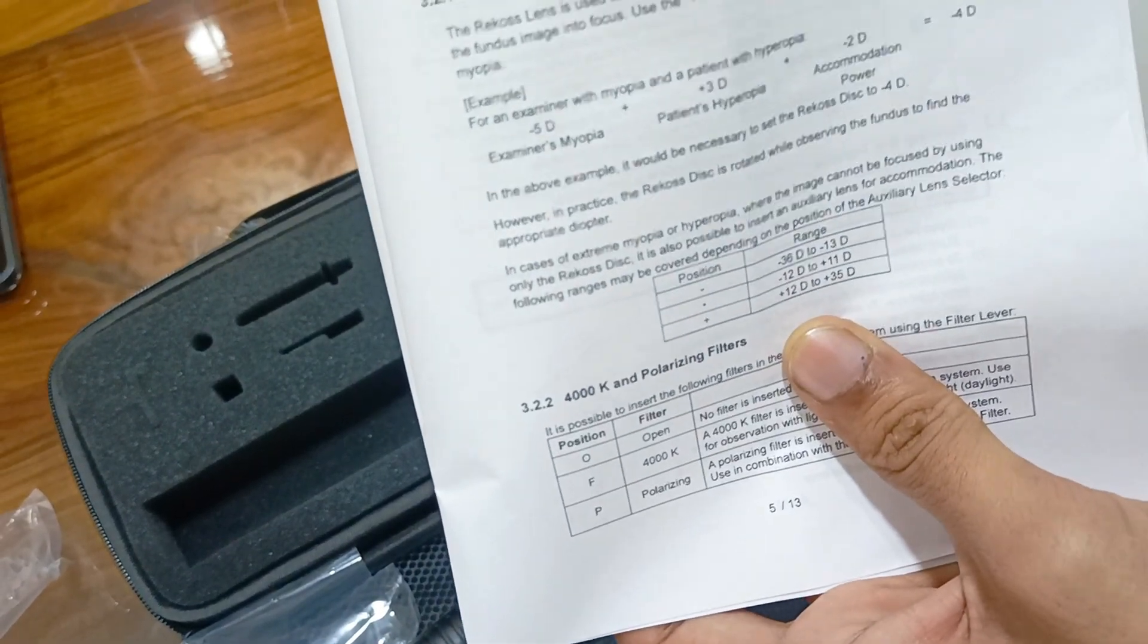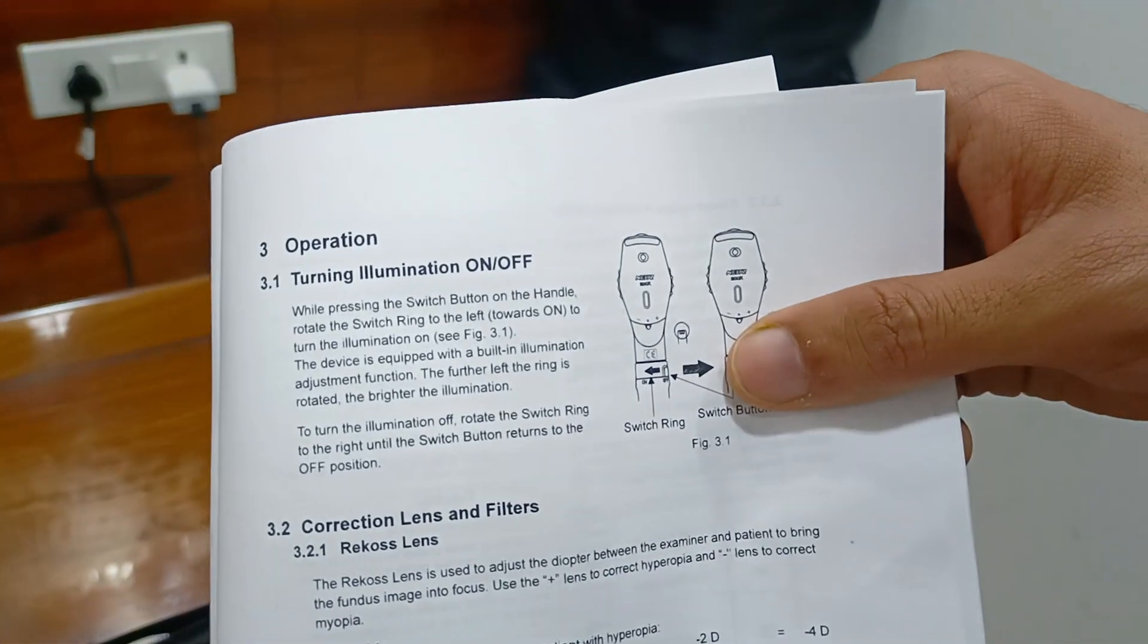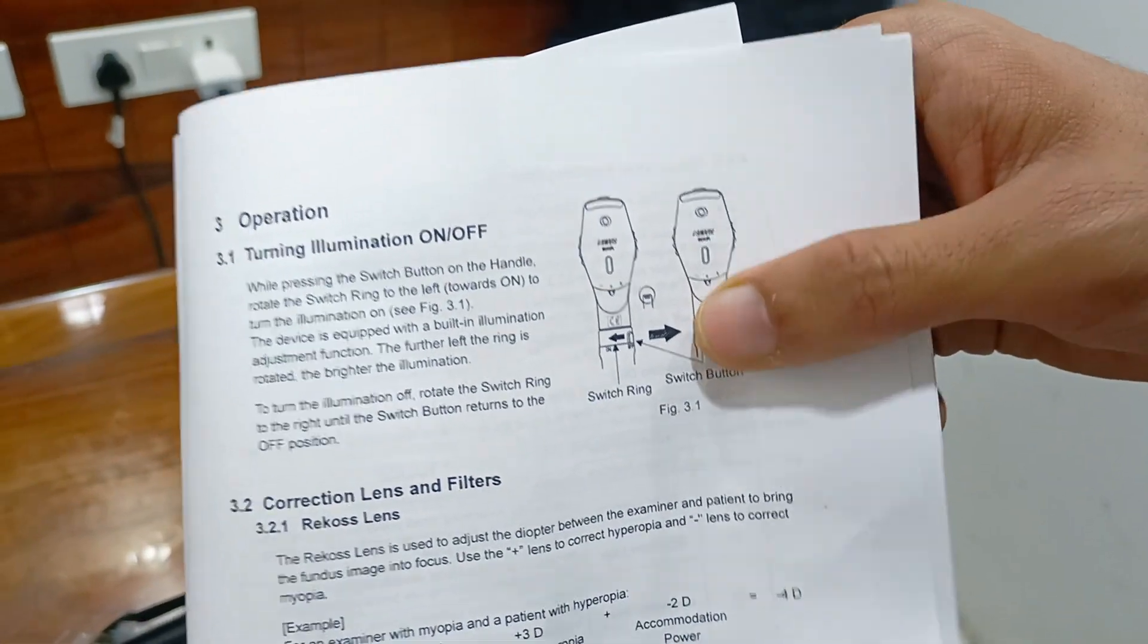Red-free filter available. Position range available: minus 13 to minus 36 diopter.